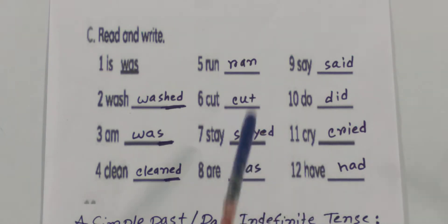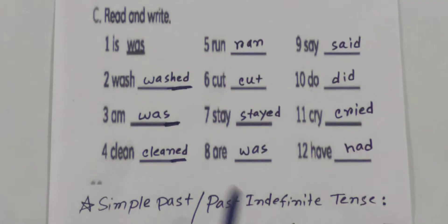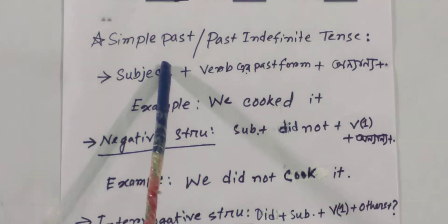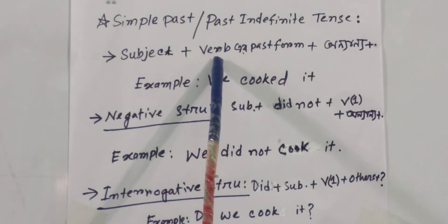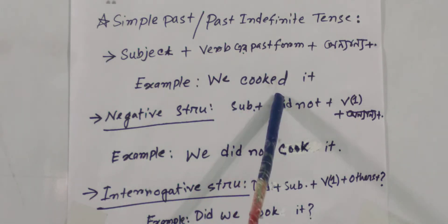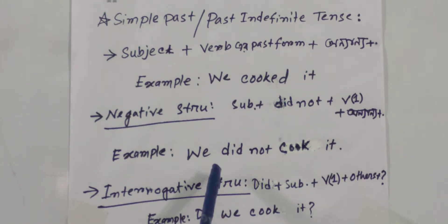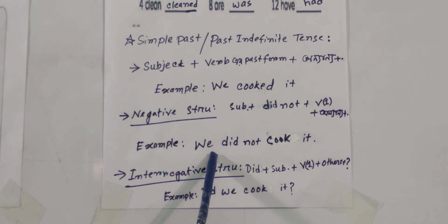Now let's see the structure. For simple past or past indefinite tense, the structure is: Subject plus verb past form plus object. Example: We cooked it. The affirmative structure is: Subject plus verb past form plus object.